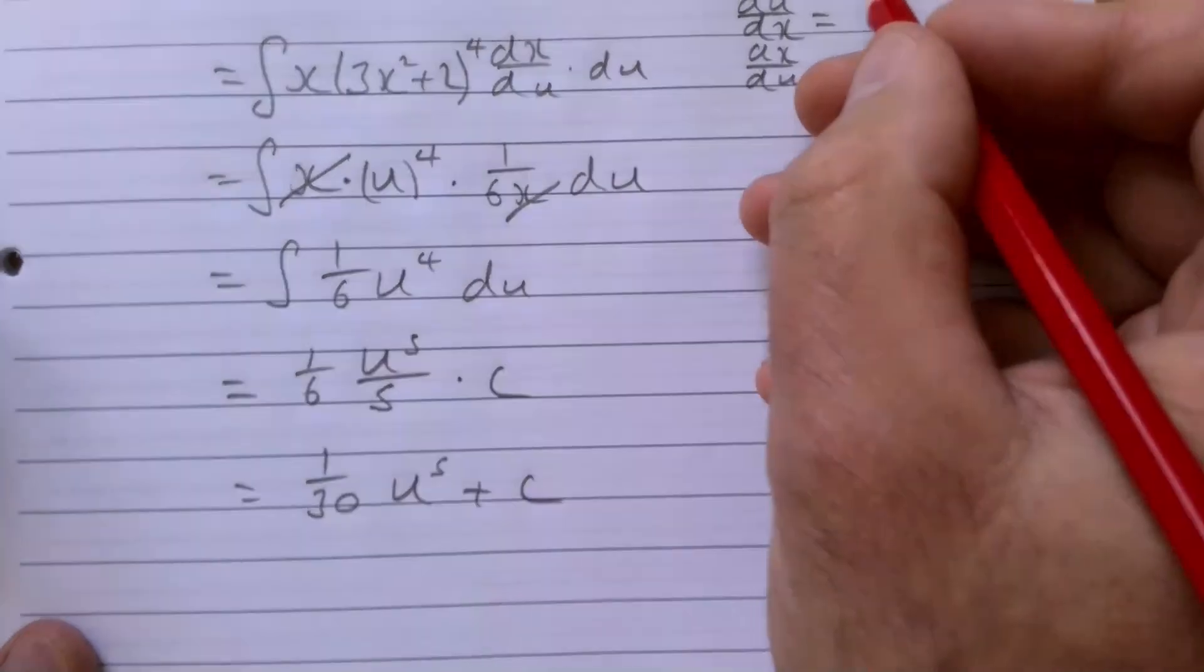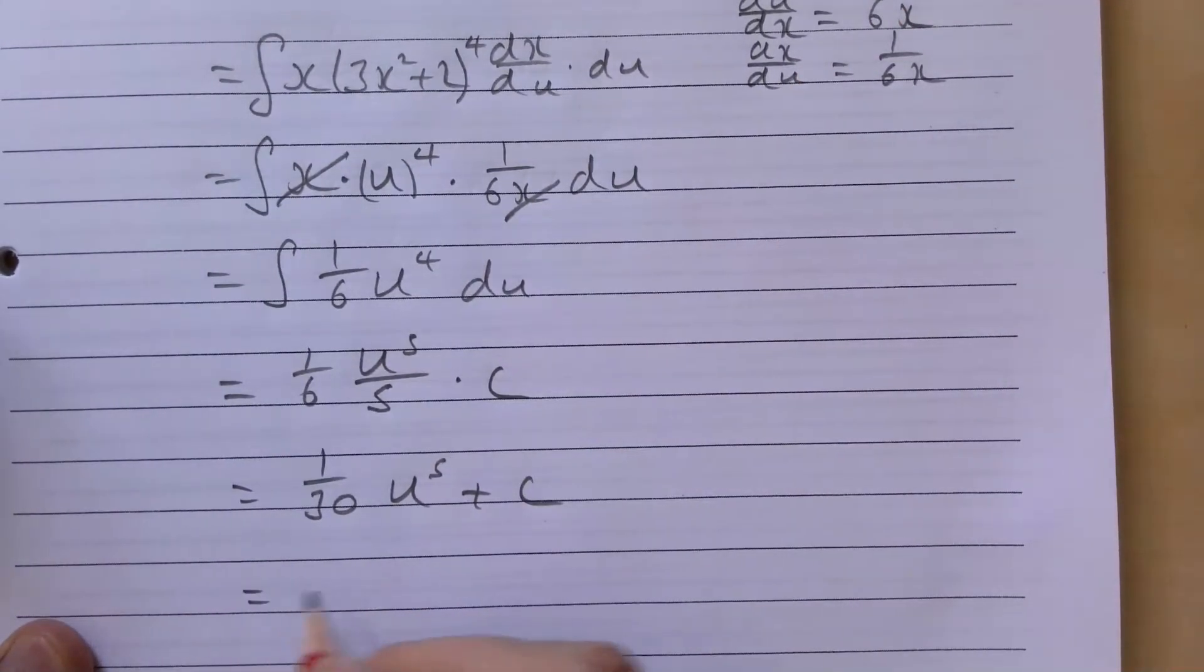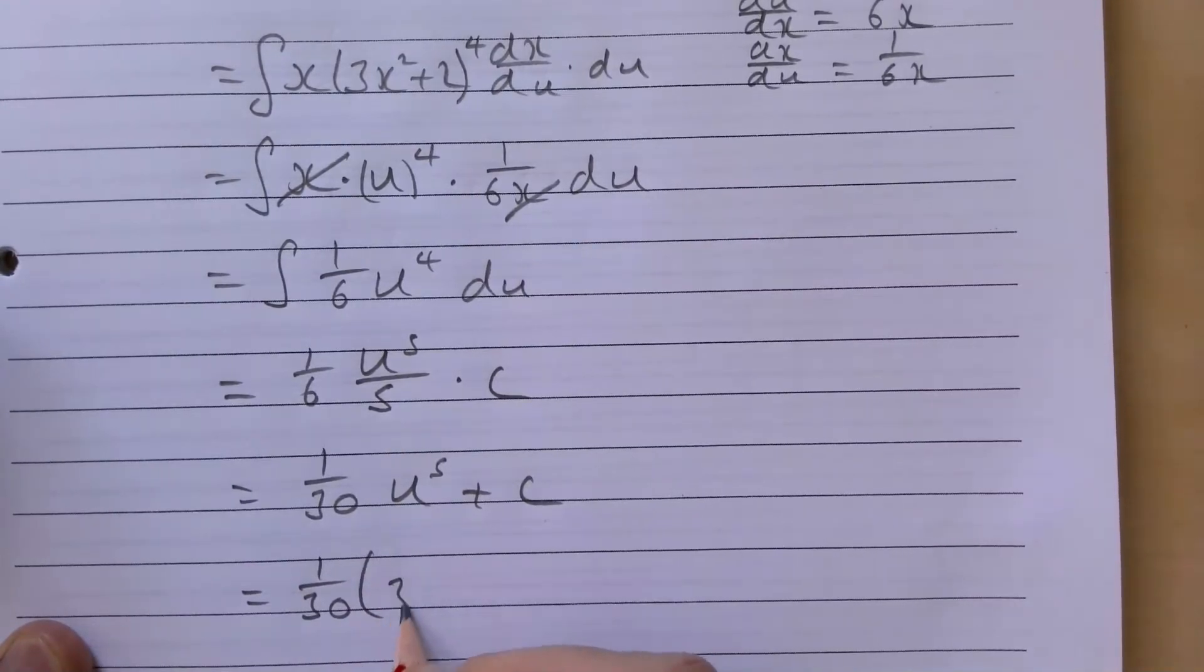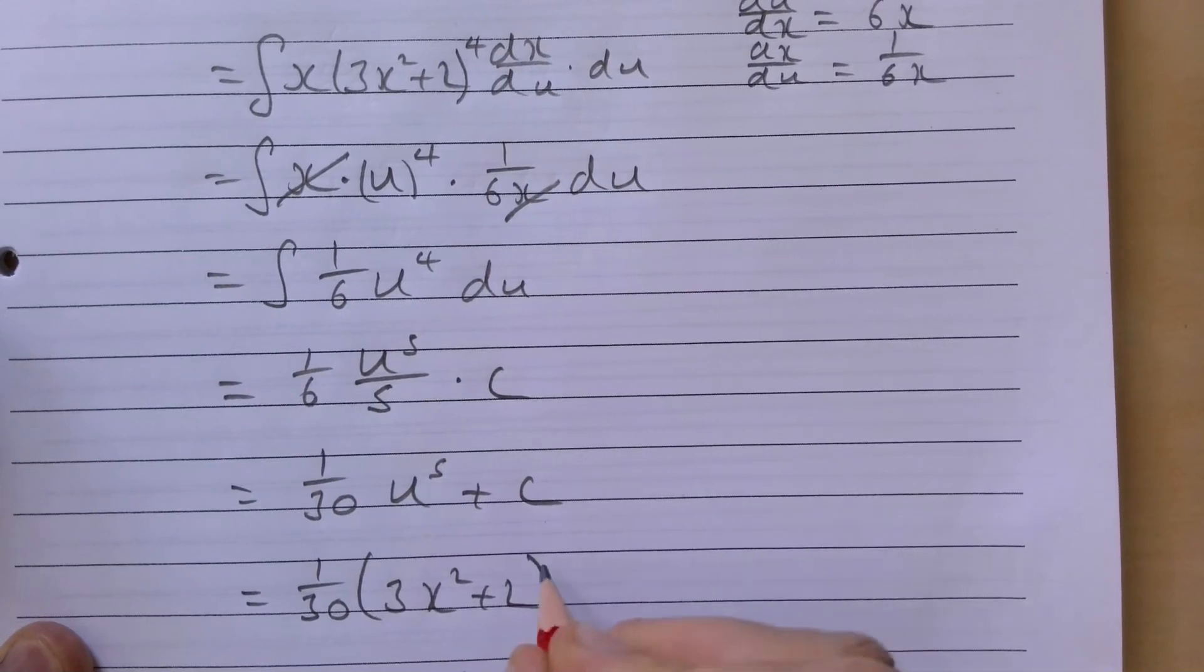So changing our u back to the original part is then going to give us 1/30(3x² + 2)⁵ plus c.